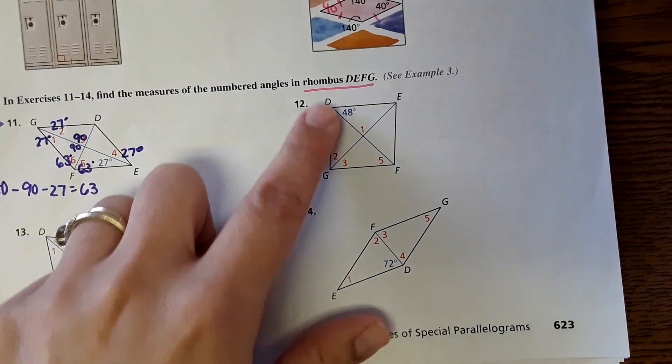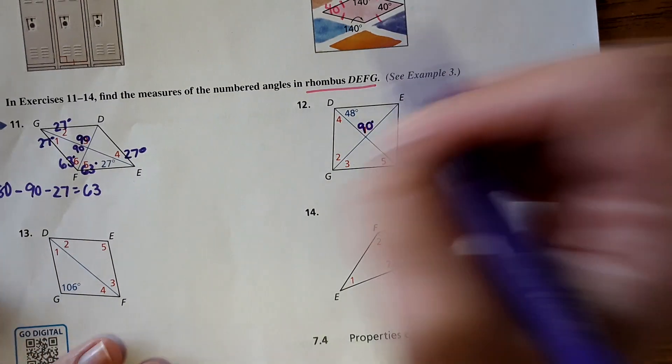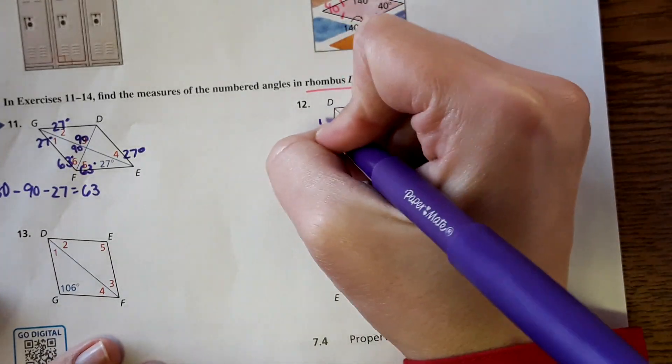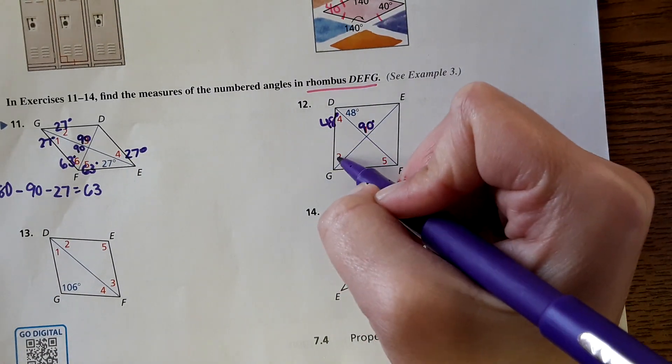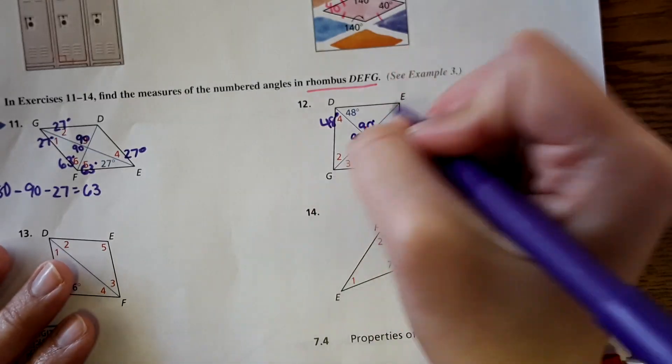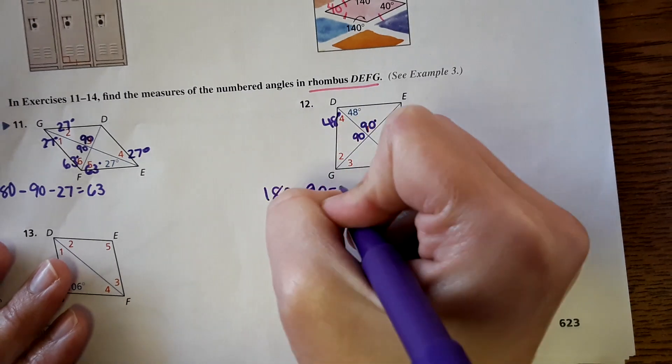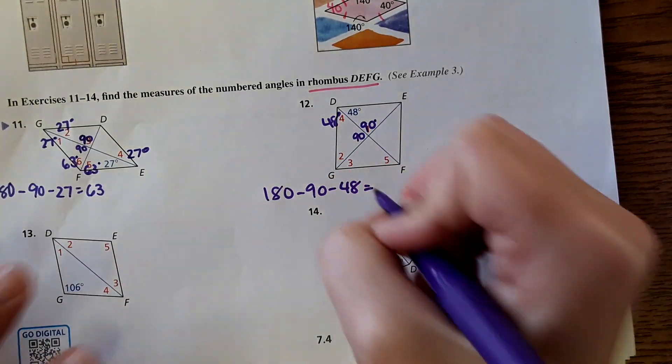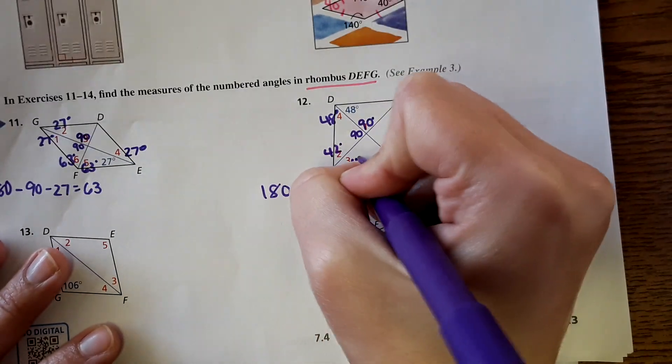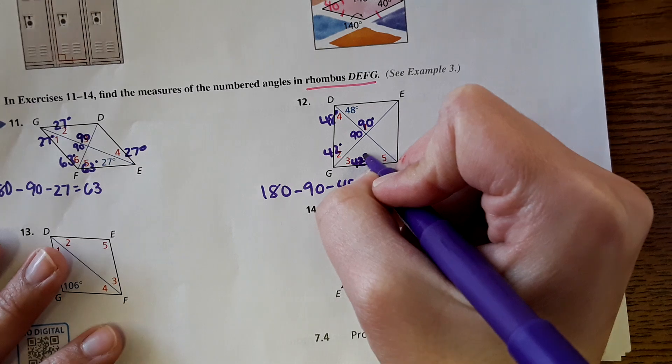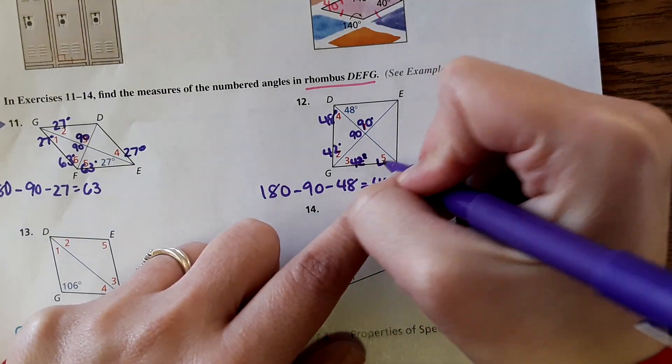Number 12. Again, it tells us it's a rhombus. So that means this angle has to be 90 degrees. These diagonals bisect, so this would have to be 48. Then we could figure out this angle. This would have to be 90. These three angles would have to be one added to 180. So 180 minus 90 minus 48 equals 42 degrees. So this would be 42. And then this would also have to be 42. Opposite angles are equal and this bisect, so this would have to be 48.